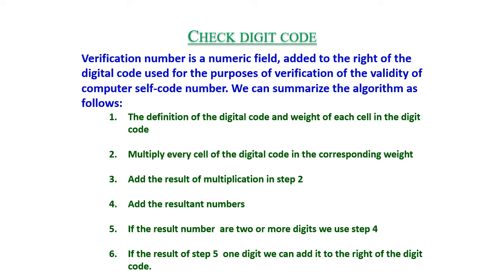Check digit code: a verification number is a numeric field added to the right of a digital code, used to verify the validity of the code. The algorithm involves: (1) defining the digital code and the weight of each digit; (2) multiplying each digit by its corresponding weight; (3) adding the results; (4) if the result has 2 or more digits, sum its digits again.